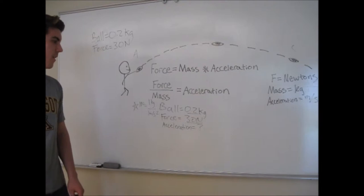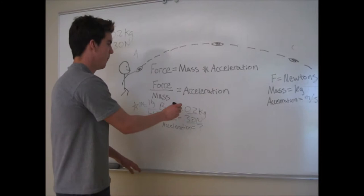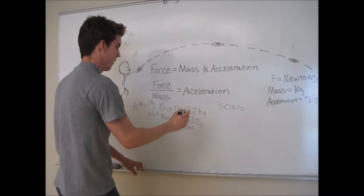Understand that Newton is also equal to 1 kilogram over 1 meters per second squared. That's how we're going to cancel variables here. So you start with force equals mass times acceleration. You fill in what you know. Force, 30 newtons, equals mass times acceleration. We know the mass, 0.2 kilograms.